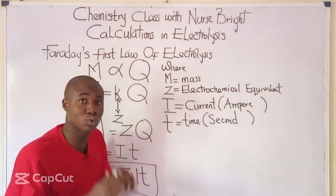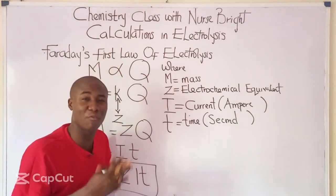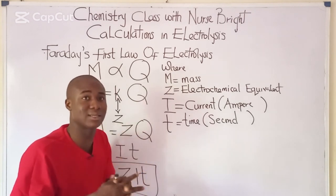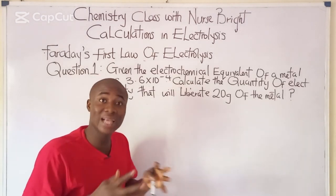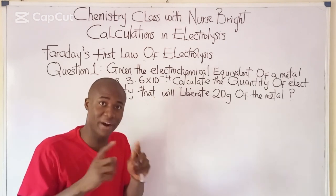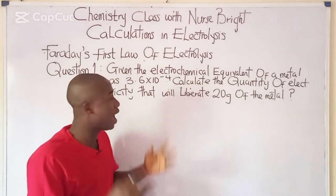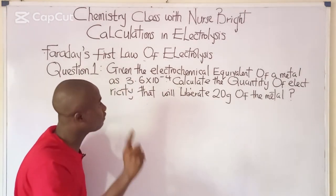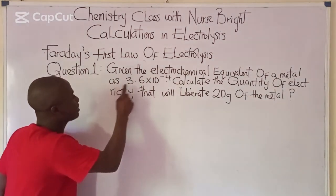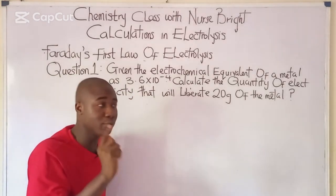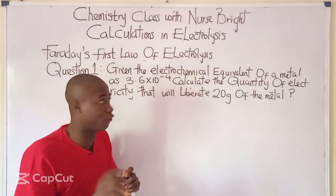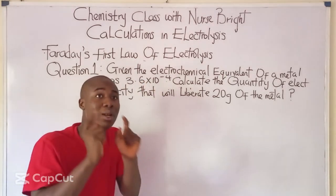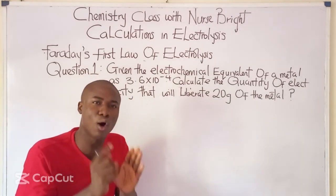This is the first part of the calculative aspect of electrolysis. Let us move over to solve practice questions. The first practice question says: given the electrochemical equivalent of a metal as 3.6 × 10⁻⁴, calculate the quantity of electricity that will liberate 20 grams of the metal.